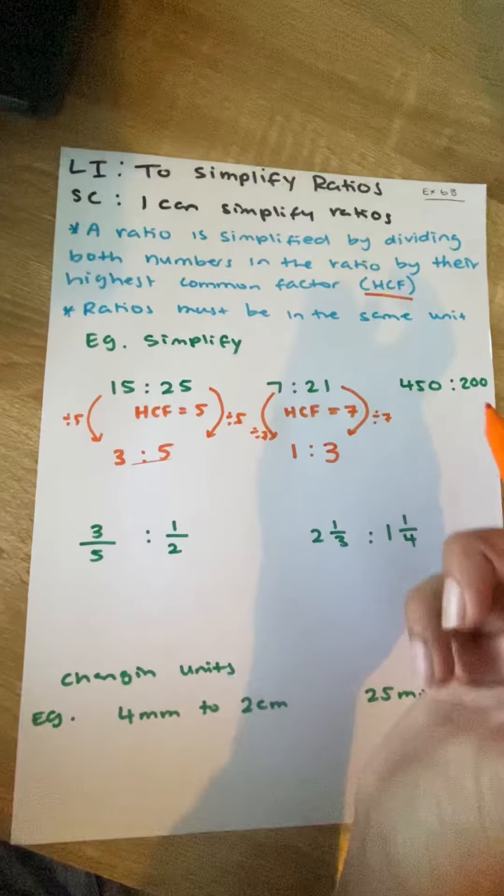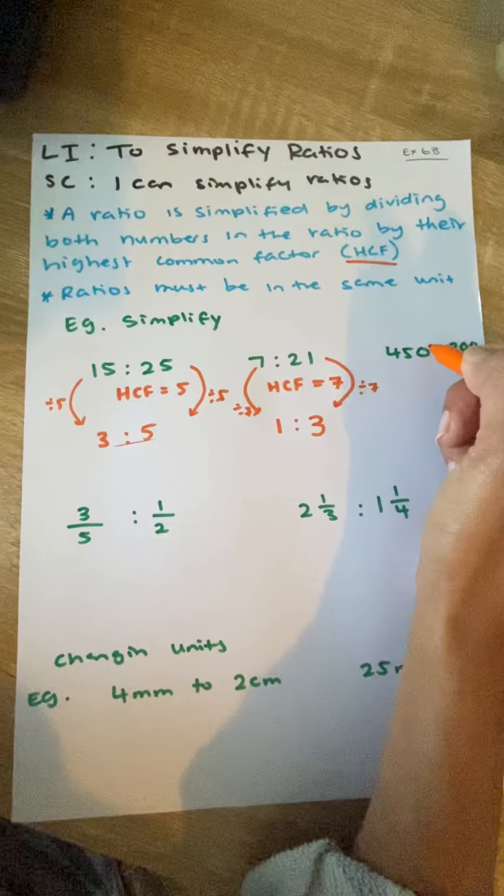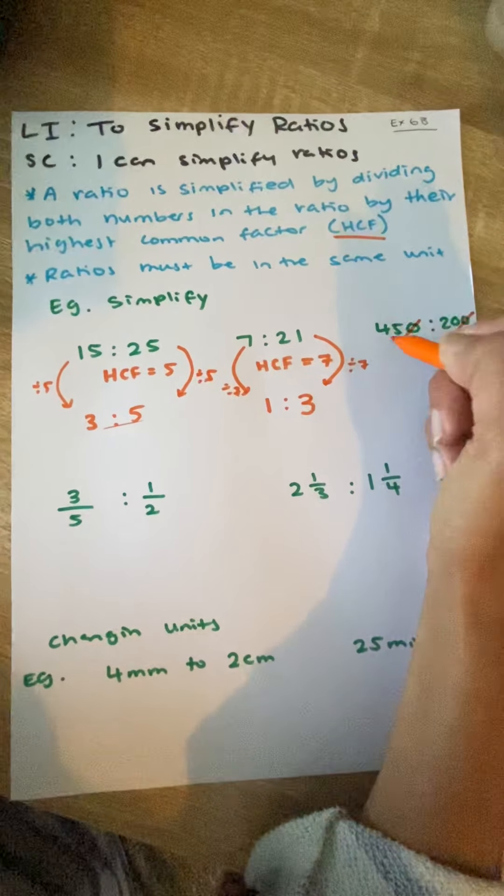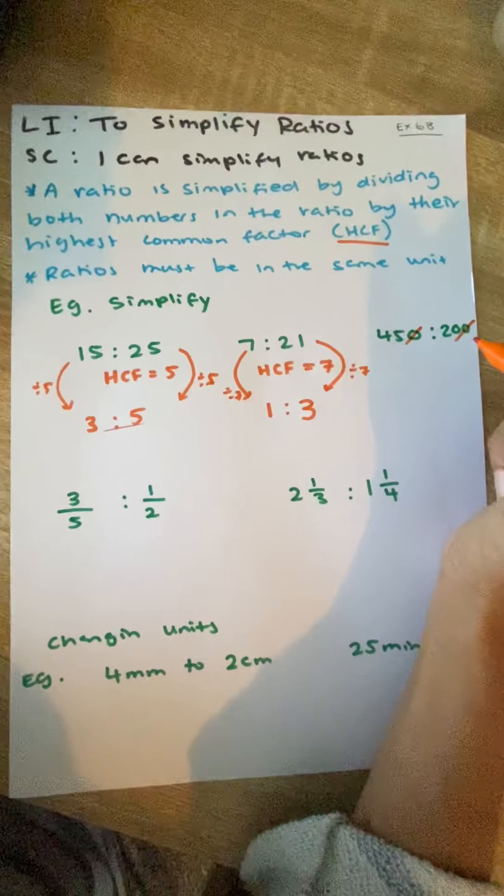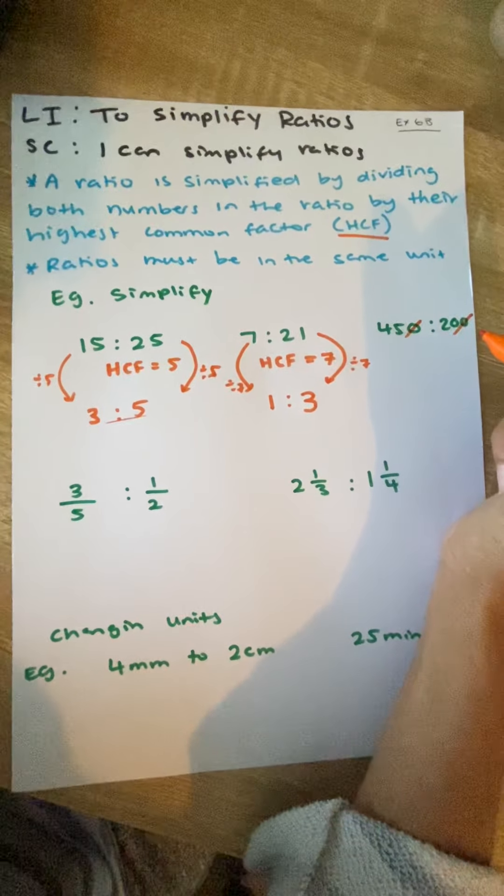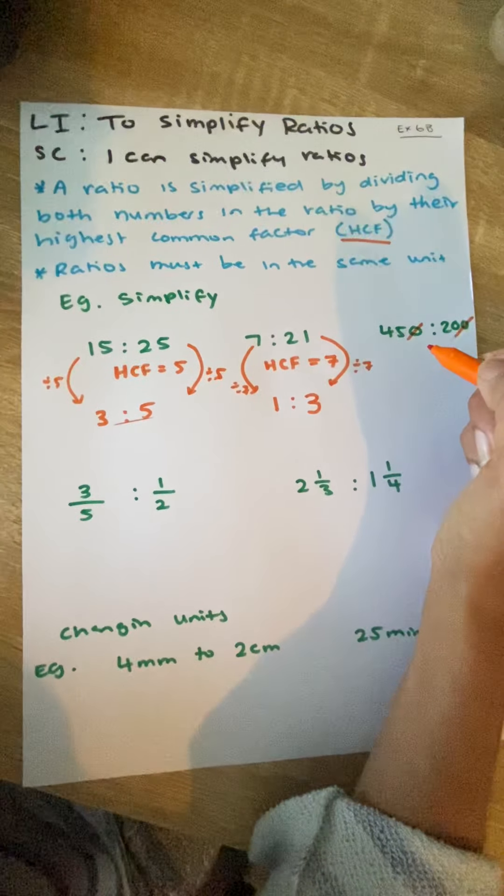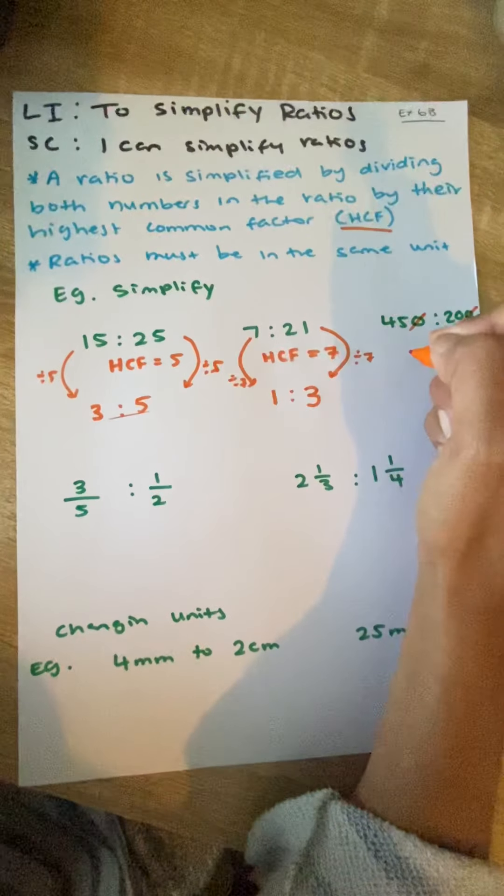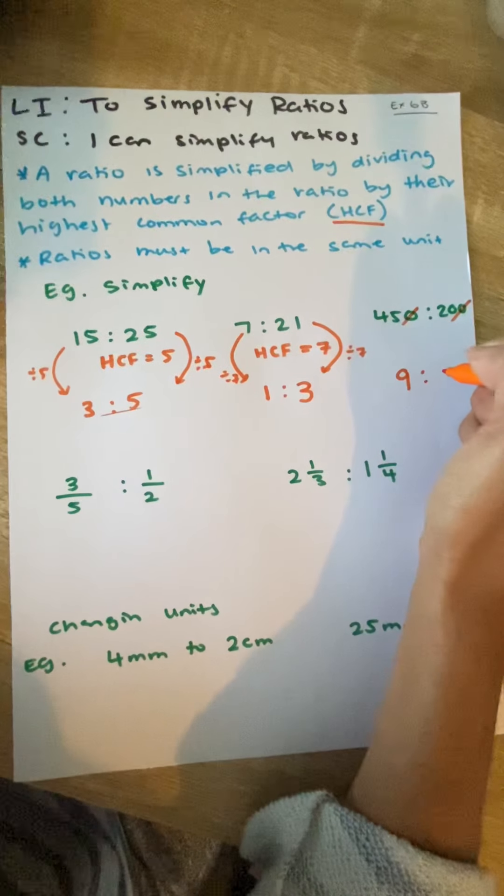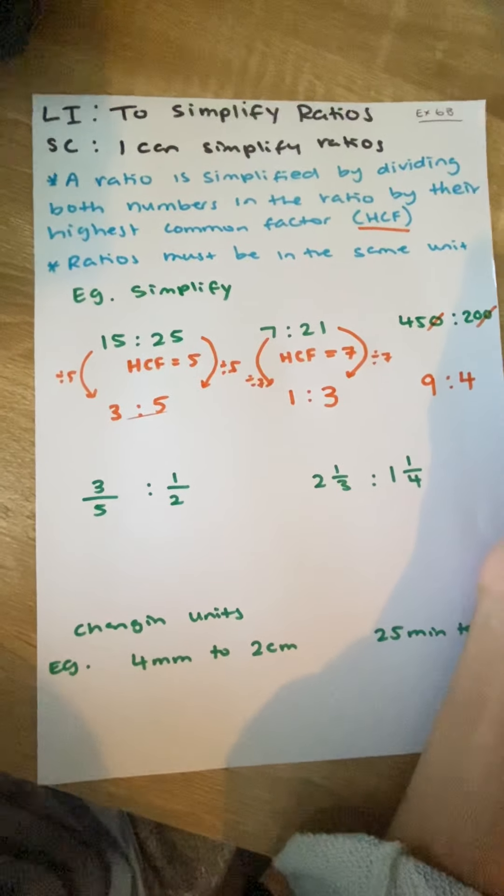Next one. An example like this, we can simplify it. So, see how this has a 0 on the end? We're going to knock it off. And if we knock off a 0 on this side, we have to knock off a 0 on this side. So, we've got the number 45 compared to 20. So, what number goes into 45 and 20? The number 5. So, 5 goes into 45 nine times. And 5 goes into the number 20 four times. That is now simplified.